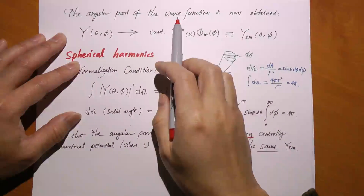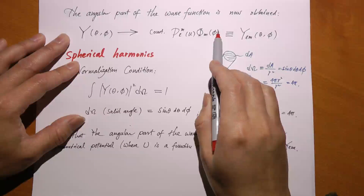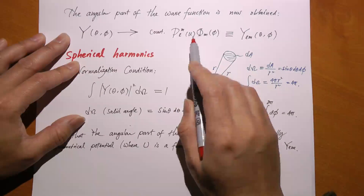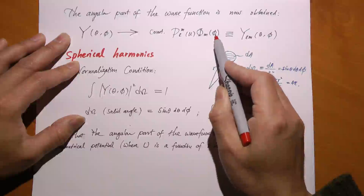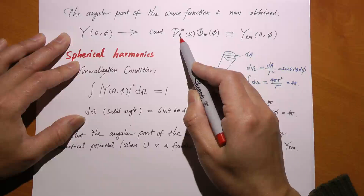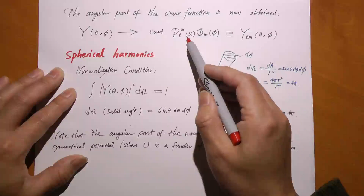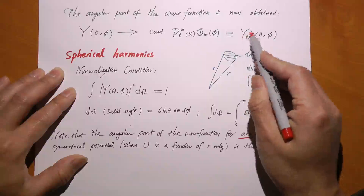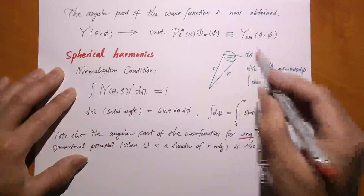The angular part of the wave function is the product of the phi-dependent part and the theta-dependent part. The phi-dependent part is e to the plus or minus im phi, and the theta-dependent part is the associated Legendre polynomial with two indices or quantum numbers: m and l. M has to be an integer so that the function remains periodic with a period of two pi, and l has to be another integer, which guarantees that when theta equals zero or pi the wave function doesn't go to infinity. Therefore the angular part of the wave function depends on two quantum numbers l and m. We write it as Y sub l,m — the product of these two — and this function is called spherical harmonics. It's extremely important in physics.